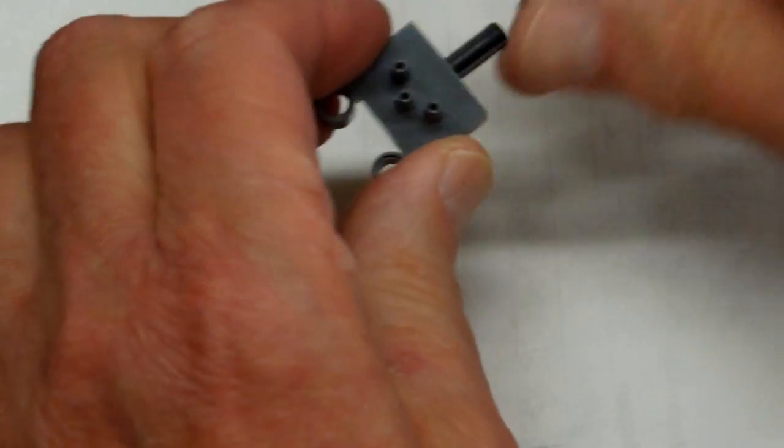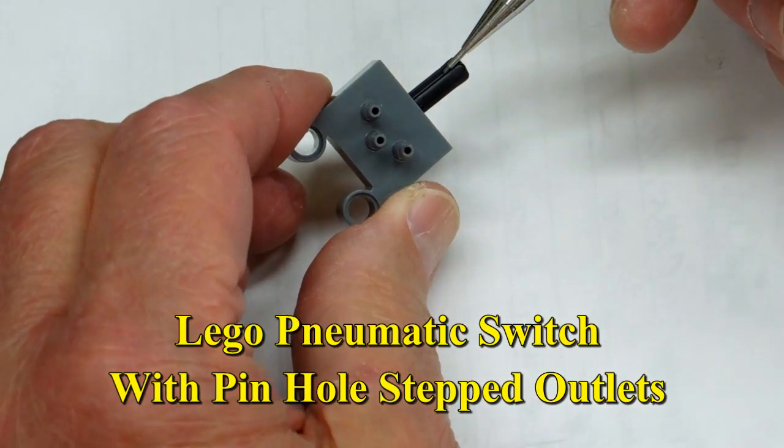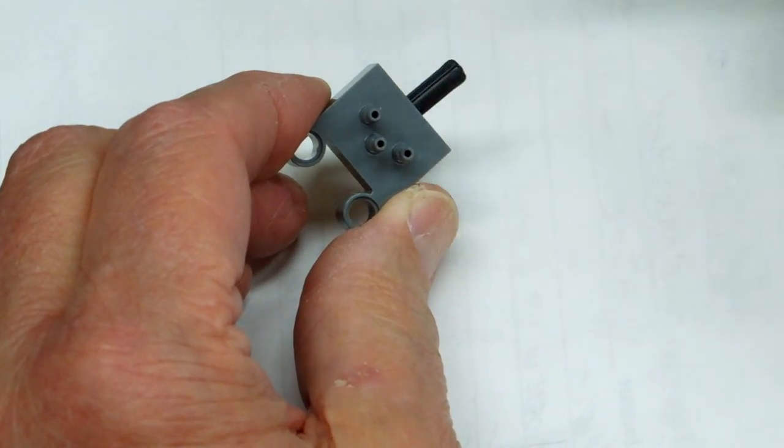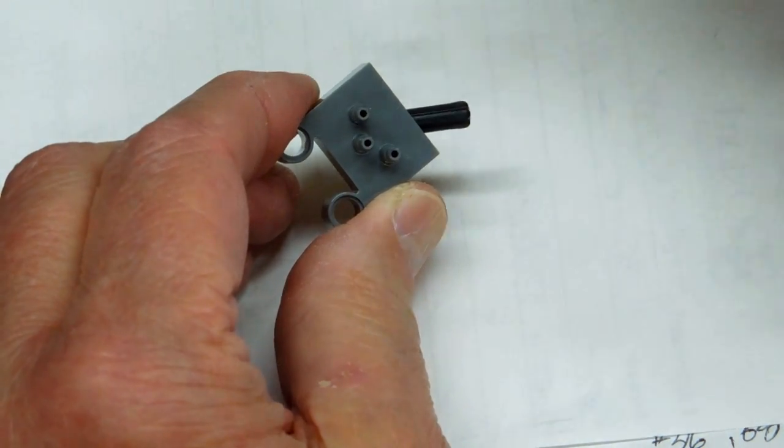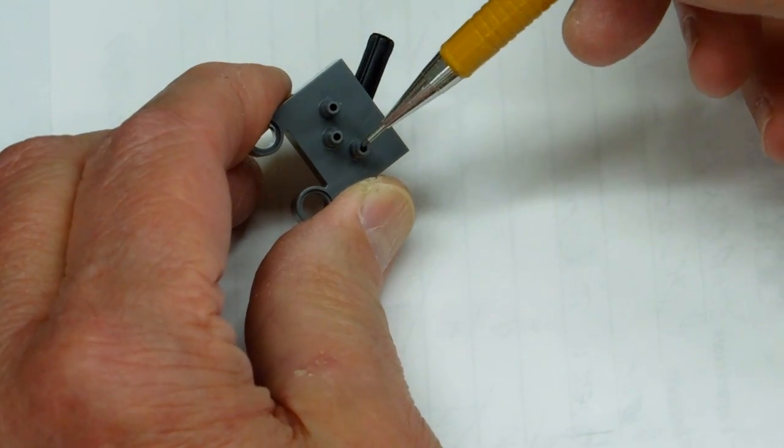This is what is called a Lego pneumatic switch. In this position the valve is off, supply air is connected here. In this position air is connected to this hole, and in this position air is connected to this hole.